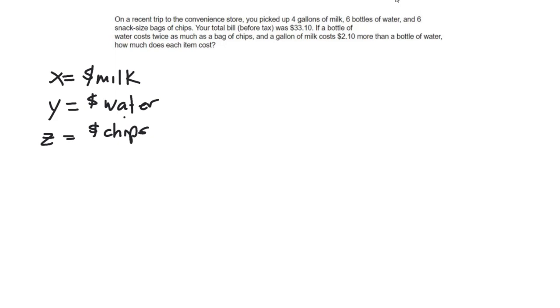It says that four gallons of milk, so four times the number of gallons of milk, plus six bottles of water, however many waters were sold, plus six bags of chips, all of that cost thirty-three dollars and ten cents.